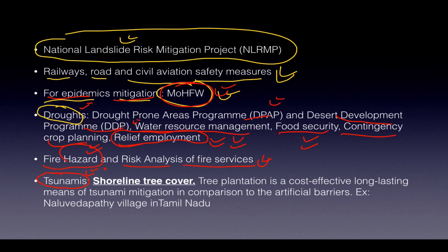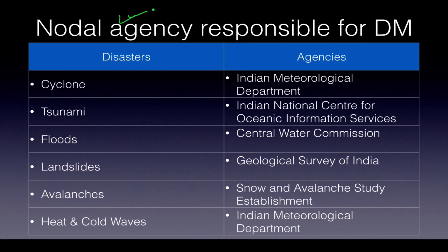For fire, there is fire hazard and risk analysis of fire services. For tsunamis, the single most important mitigation measure is shoreline tree cover — it is cost-effective, long-lasting, and better than artificial barriers. The village of Nalu Vedapadi in Tamil Nadu showed very low mortality in the 2004 tsunami due to a long coastline of trees. Mangroves also provide a good hedge against tsunamis.